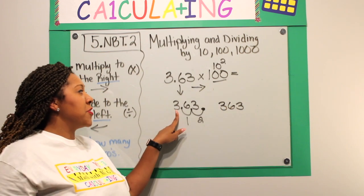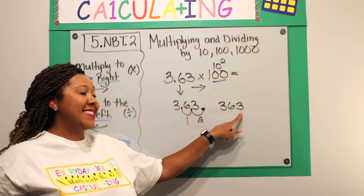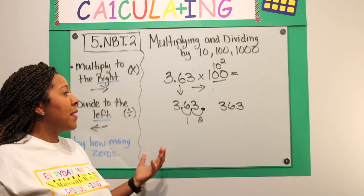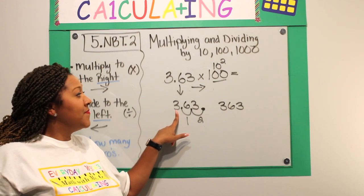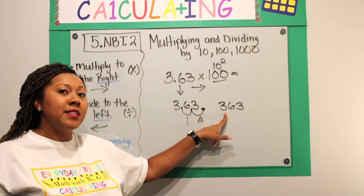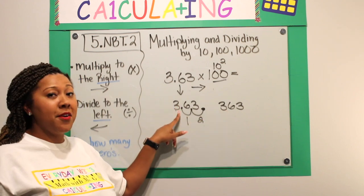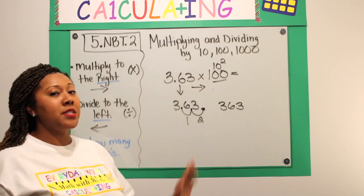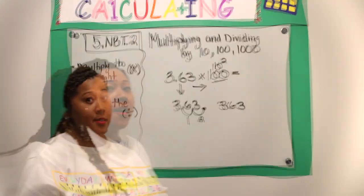I went from 3 and 63 hundredths to 363. So, what that means is, if I look at my place value, my 3 was in the ones place. Now, my 3 is in the hundreds place because 100 is 100 times greater than 1. So, I shifted over 100 times, which is two place values because of the two zeros.